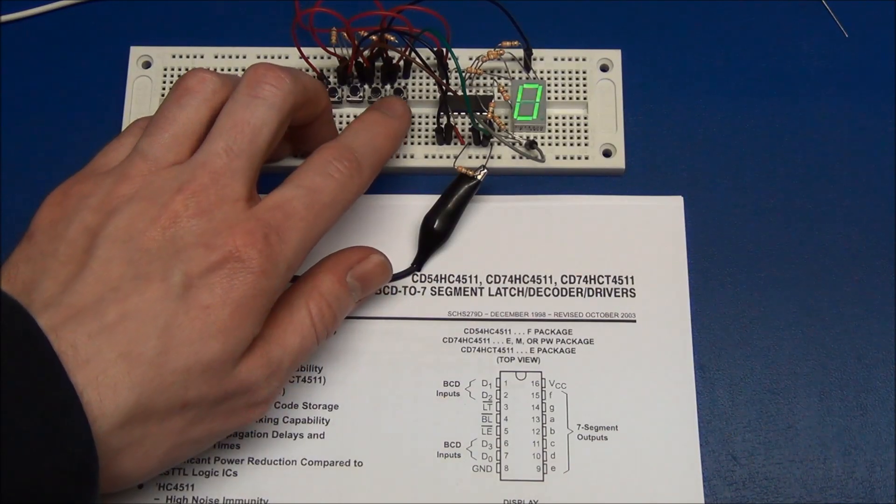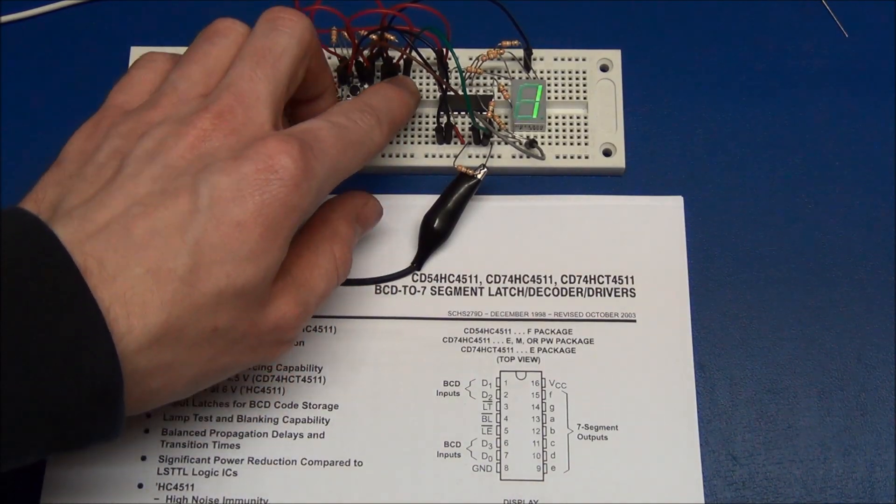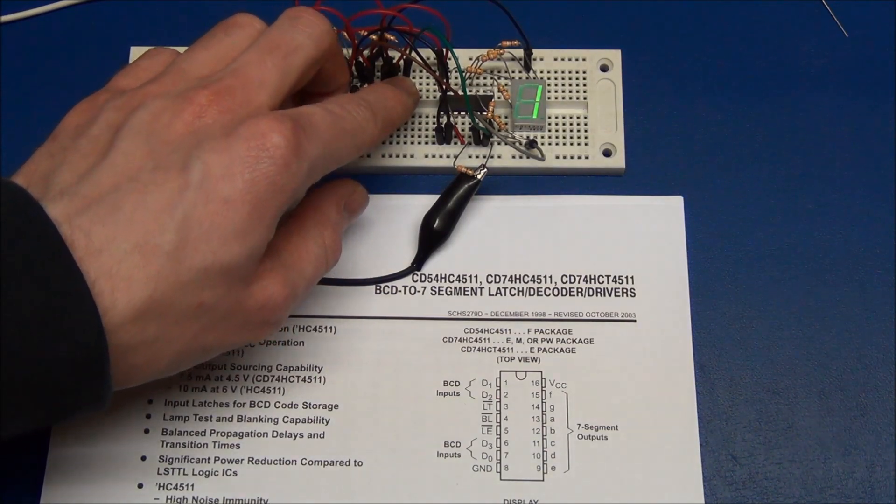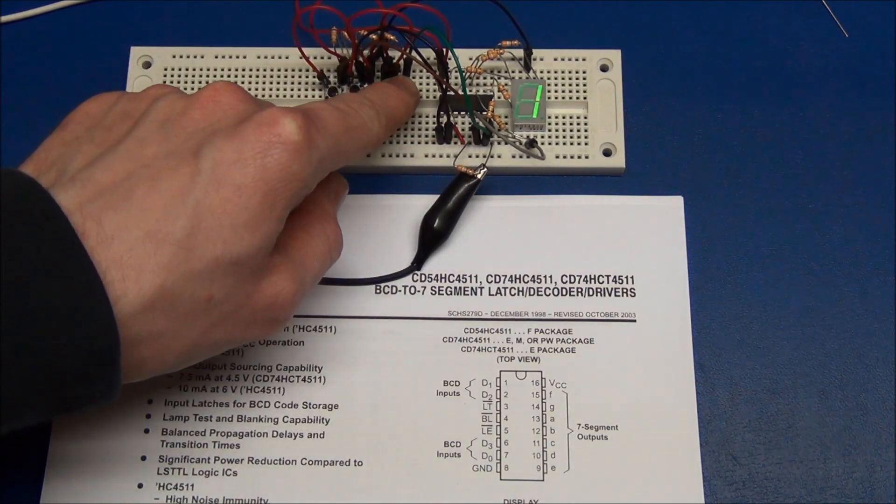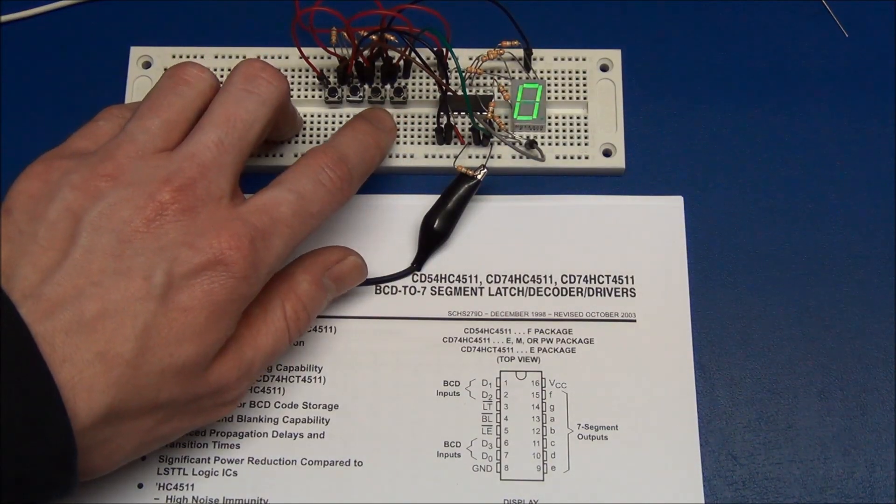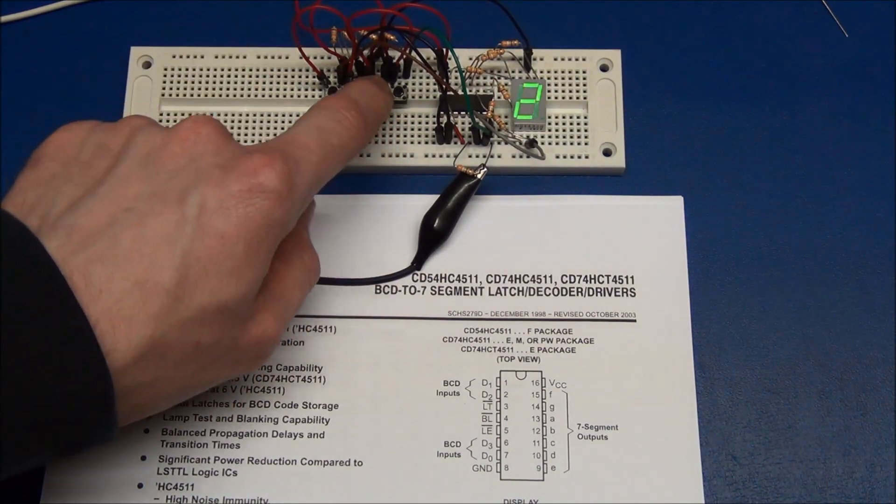So as you saw by pressing the least significant digit, that will be a 1 in binary and a 1 in decimal, and it will give us a 1 on the display. And of course to display a 2 in binary we will press this button.